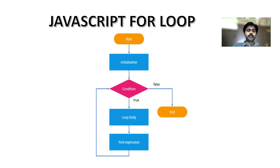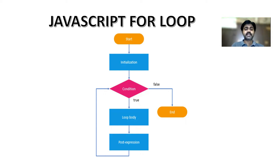We will check the JavaScript for loop — the declaration, condition, and expression: for i equal to 0, i less than or equal to 10, i plus plus. There is also the JavaScript for-in, so we'll look at the normal for loop and the for-in.